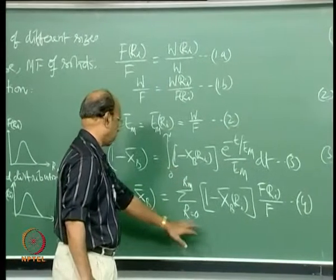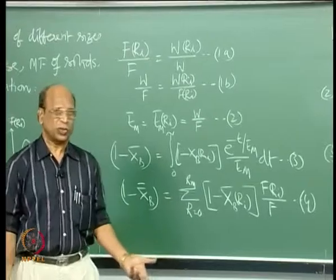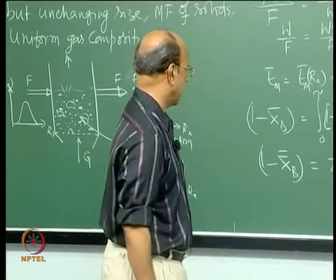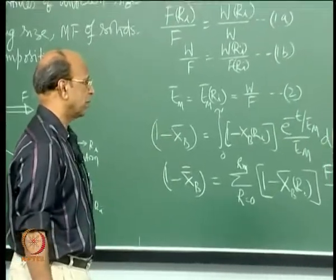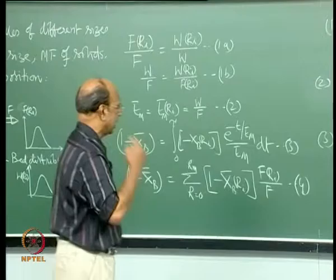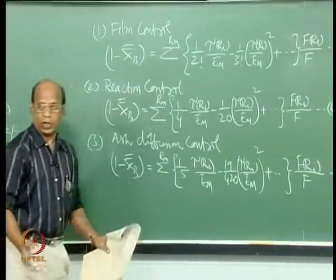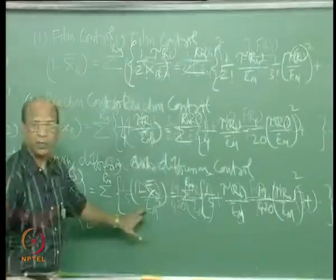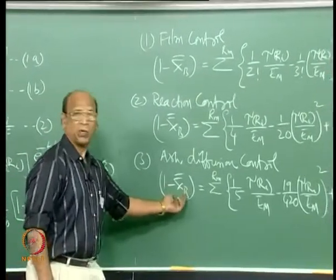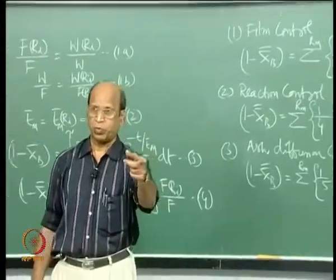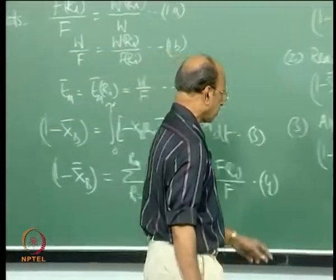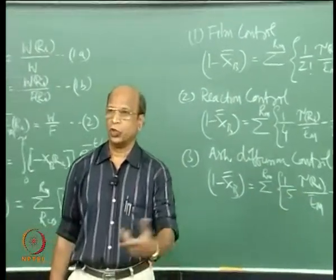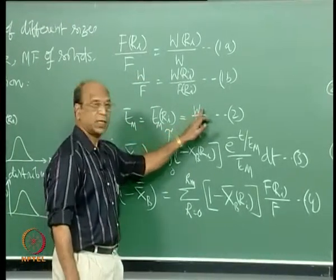Conceptually, you do not need to understand anything more — the mathematics just gets messy. As usual, if you know the reactor hold-up W and flow rate F, you know t̄_m and can calculate x̄. For a new reactor, x̄ is typically given — say 90% — and then you solve the design equation to get t̄_m. Once you know t̄_m, you use it to calculate W.